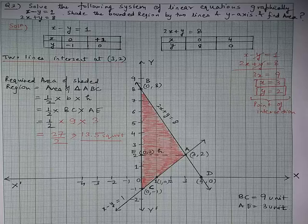Clearly, the two lines intersect at the coordinates (3, 2). The area enclosed by the lines and the y-axis is shaded as triangle ABC. The area of a triangle is half × base × height. Here base BC is 9 units and height AE is 3 units, so area = ½ × 9 × 3 = 13.5 square units.